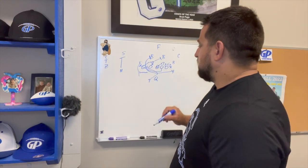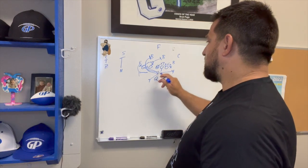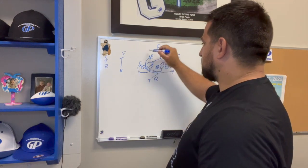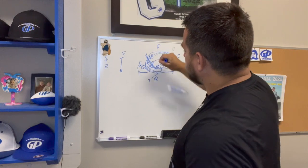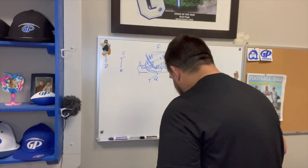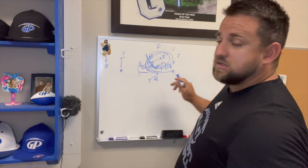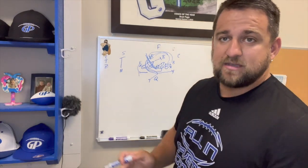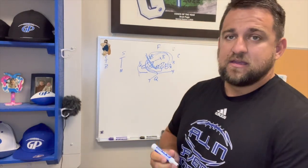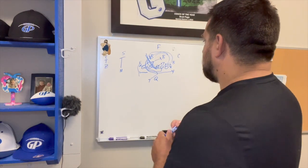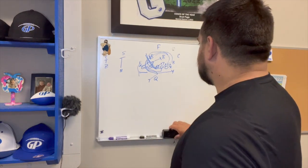If these guys go screaming inside because they see the back going there, perfect — we create all this mess, create a huge wall, and use the defense's momentum against them. If they want to be over-aggressive, we know how to manipulate that. That's how we run the counter, and then we obviously have the play action off of it.